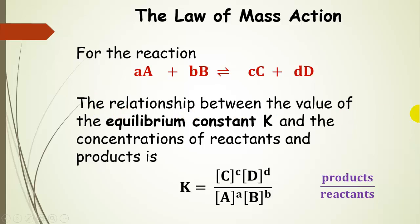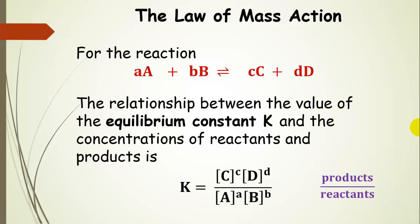The relationship between the value of the equilibrium constant K and the concentrations of reactants and products is the equilibrium constant expression. We have products over reactants: product C raised to the coefficient c power, product D raised to the coefficient d power, divided by reactant A to the a power and reactant B to the b power. Each species is raised to the power of its coefficient. This is the law of mass action.